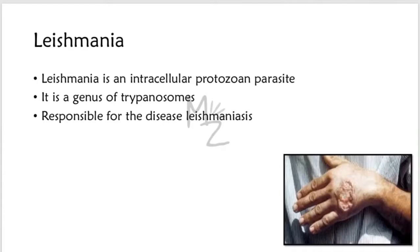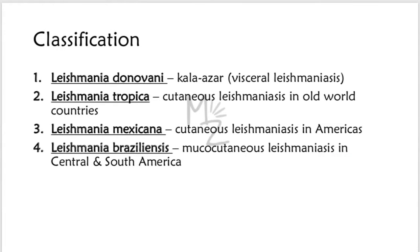Leishmania is an intracellular protozoan parasite and a genus of trypanosomes responsible for the disease Leishmaniasis. It has four main types: Leishmania donovani, responsible for Kala Azar or visceral Leishmaniasis; Leishmania tropica, responsible for cutaneous Leishmaniasis in Old World countries; Leishmania mexicana, responsible for cutaneous Leishmaniasis in the Americas; and Leishmania braziliensis, responsible for mucocutaneous Leishmaniasis in Central and South America.